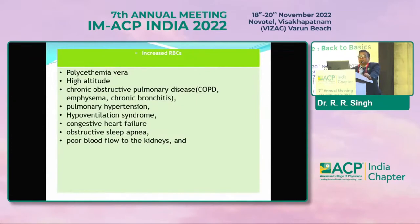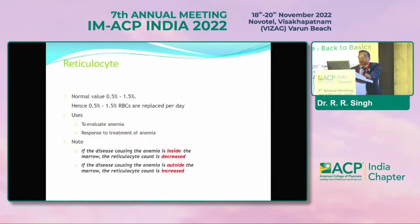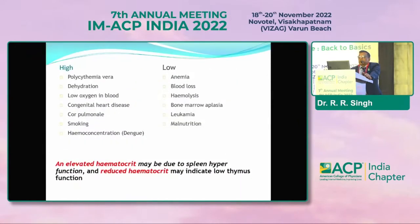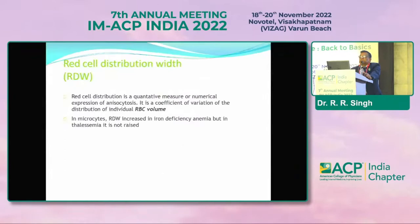RBC count is increased in polycythemia vera, in persons at high altitude, and in diseases like COPD, pulmonary hypertension, and obstructive sleep apnea. Reticulocyte count is normally 1 to 2%. RDW — red cell distribution width — is a quantitative measure in numerical expression of anisocytosis, indicating the distribution of individual RBC volumes.